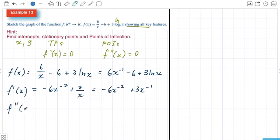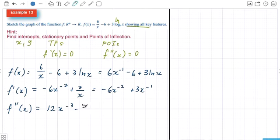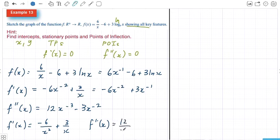Second derivative: this is going to be 12x^(-3) - 3x^(-2). I've got my two derivatives and I'm going to write them in a nicer form: f'(x) = -6/x² + 3/x and f''(x) = 12/x³ - 3/x².